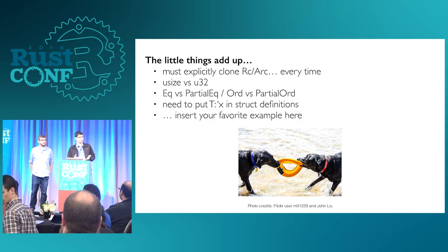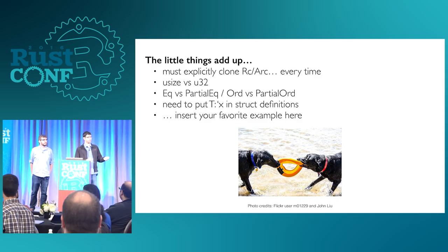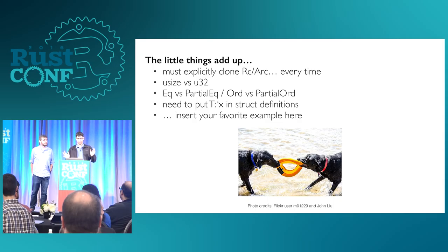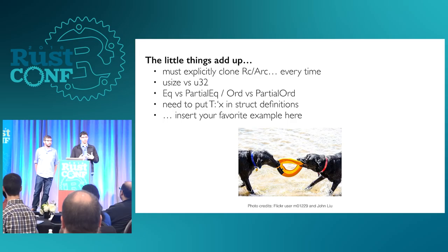There's a list of things like these — they all exist for a technical reason, and sometimes it's very important to have control over these details. But it's not always important, and it would be really nice if you could choose these details in a few places and let the compiler work out the rest. If we do that, I think we'll find the trade-off between explicitness and ergonomic programming can be resolved — it just won't be an issue.